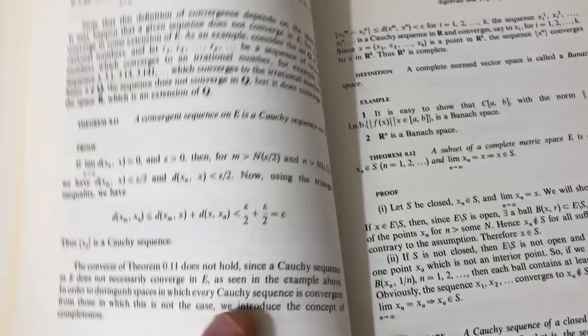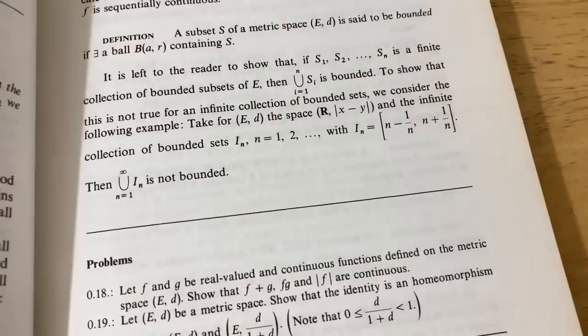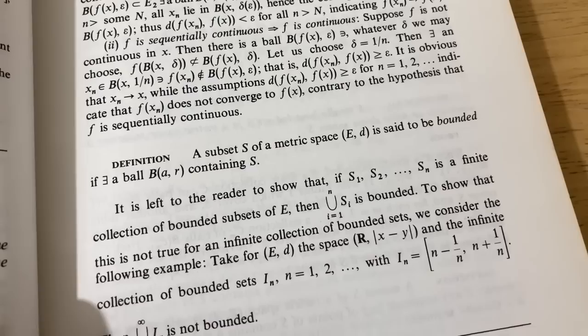Here we go. Sequences and metric spaces. Completeness. Convergent sequences. A complete norm vector space is called a Banach space and they have some problems. Continuity in metric spaces. A subset is bounded. If there's a ball containing that set. Cool.